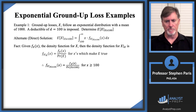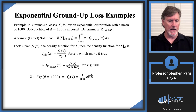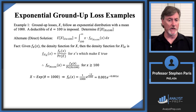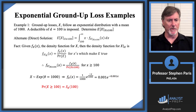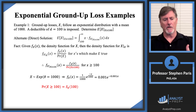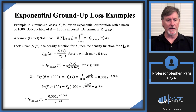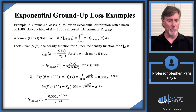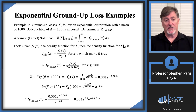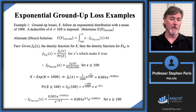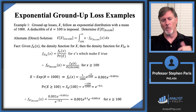Cap X is exponential with mean 1,000, so the density function is 0.001 times e to the minus 0.001x. The probability that cap X is greater than 100 is the survival function evaluated at 100, which is e to the minus 0.1. So the conditional density for cap X given cap X is greater than or equal to 100 simplifies accordingly, and is defined for x values greater than or equal to 100.